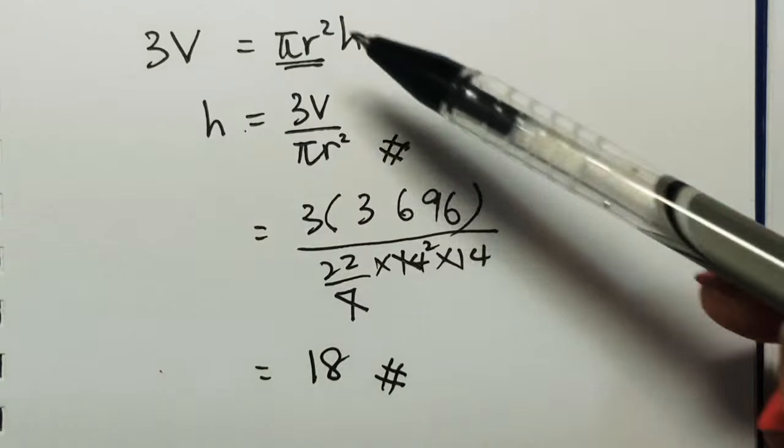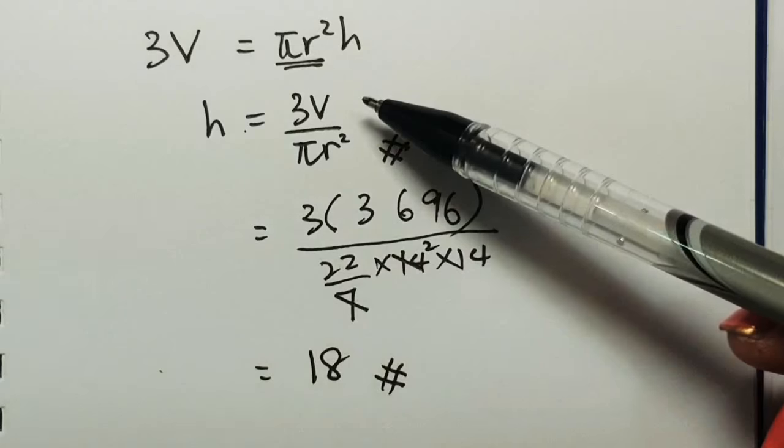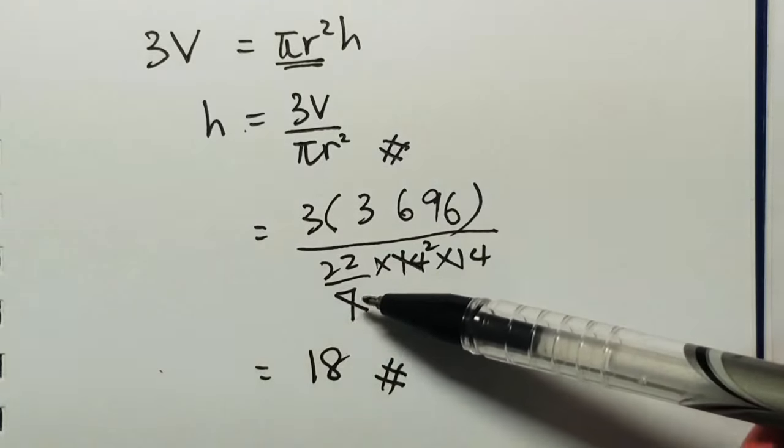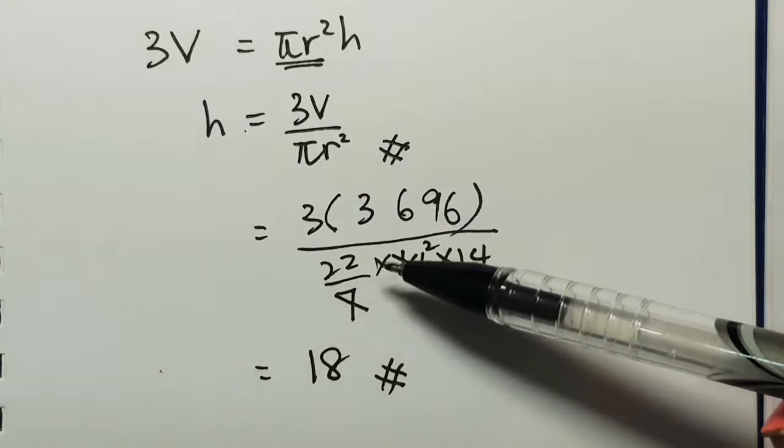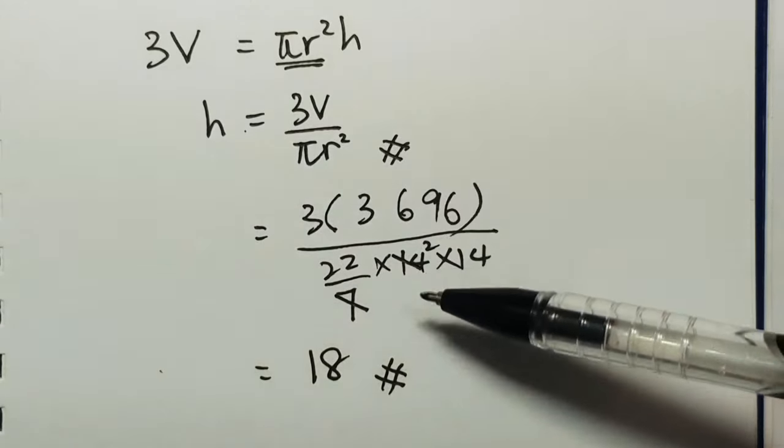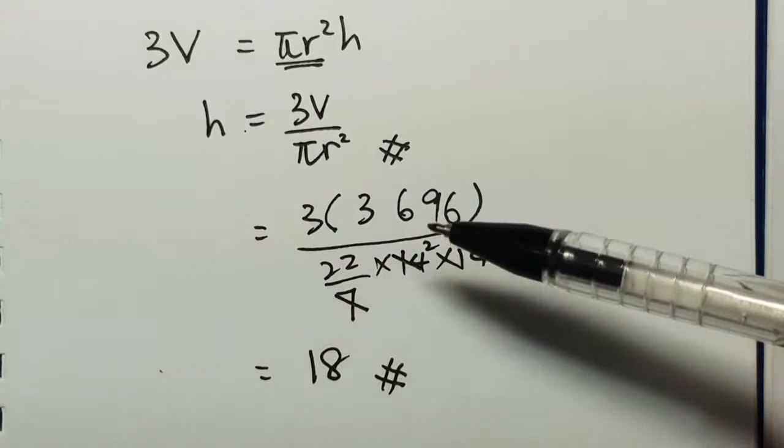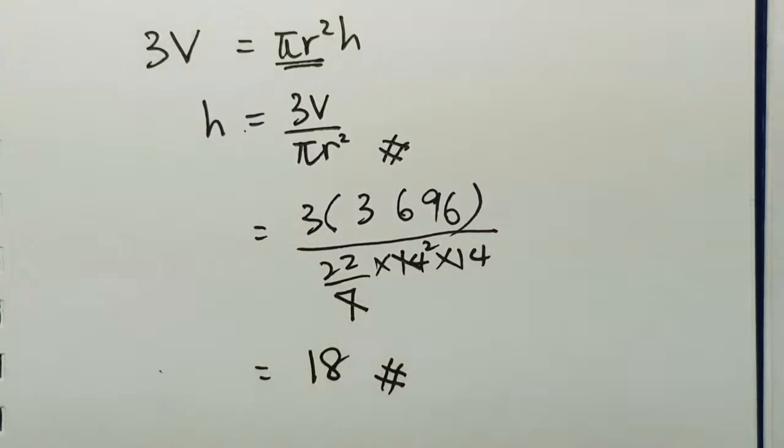So this is just to test whether you know how to rewrite your equation. And the next part will be testing your substitution skill. And lastly is your technology skill. That means how you use your calculator. So the answer is 18.